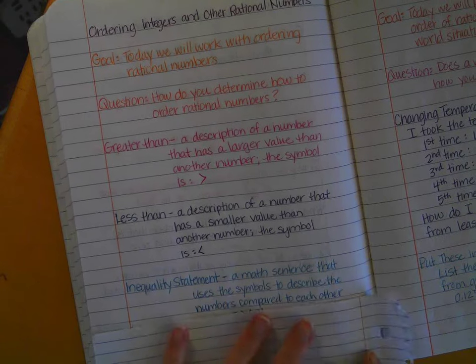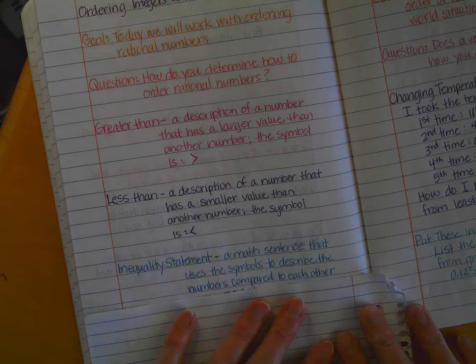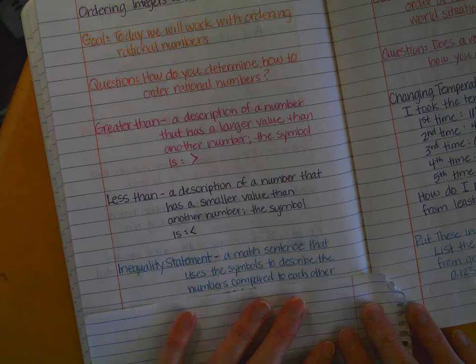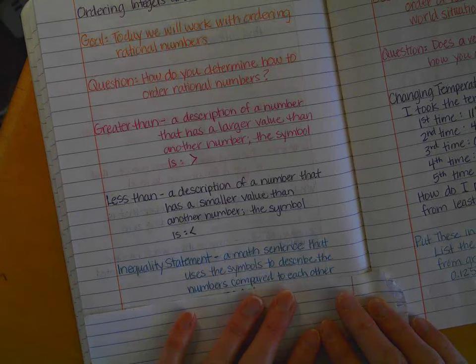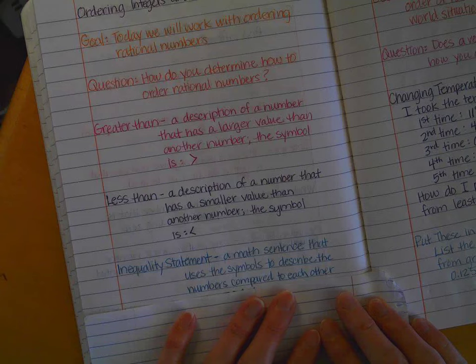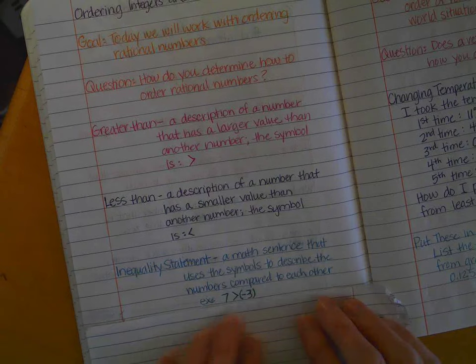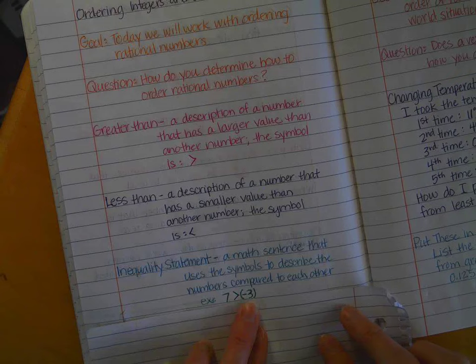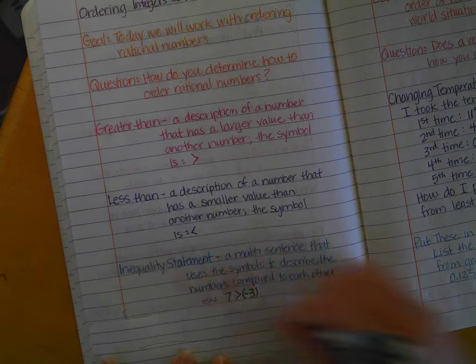So an inequality statement is the next thing that we need to talk about. I'm pretty sure that almost all of you actually already know what an inequality statement is. You just may have never been taught that that's what it's called. So an inequality statement is a math sentence that uses the symbols to describe numbers compared to each other. So this is an inequality statement. We say that seven is greater than negative three, and that is correct. If you looked on a number line, let's draw one. I'll show you.